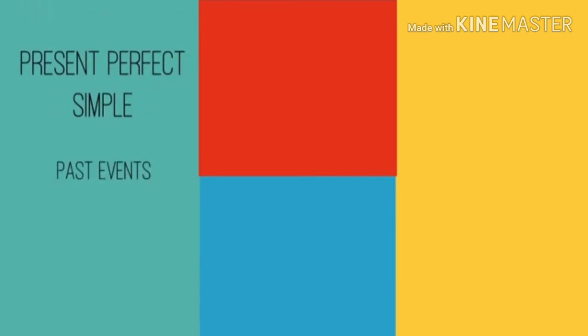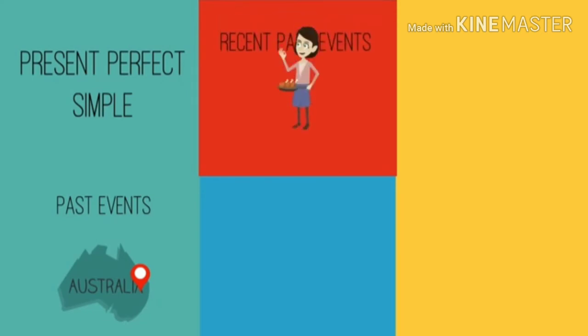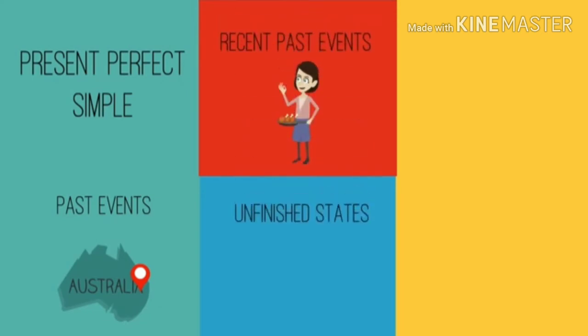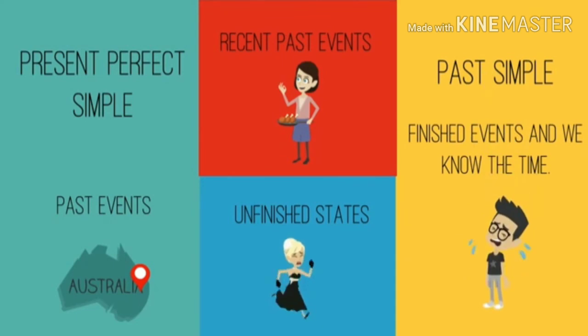So, to summarize: we use the present perfect simple for past events, recent past events, and unfinished states. And we use the past simple for finished events where the time is known.